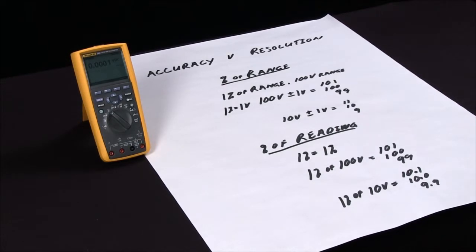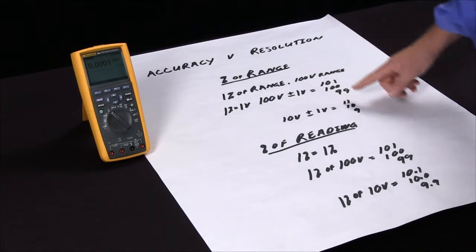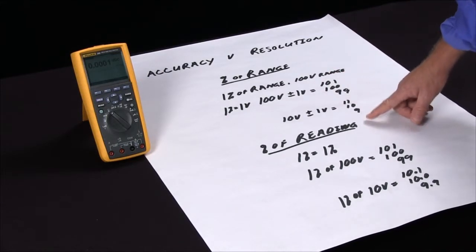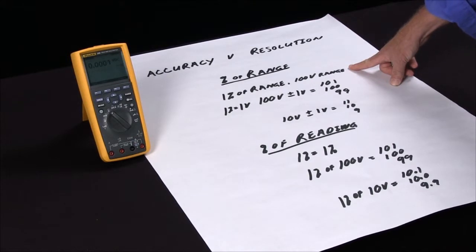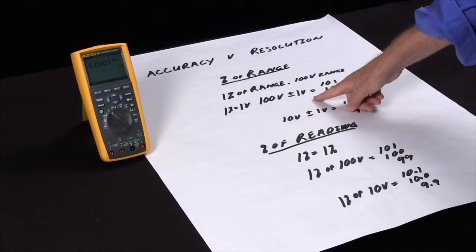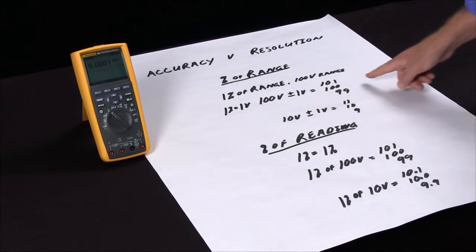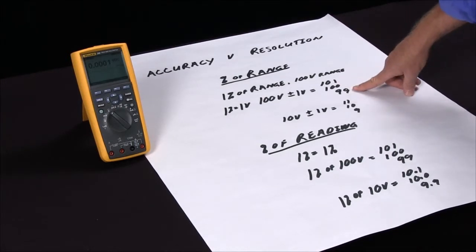So there's two ways we have accuracy specified. One is in percent of range and one is in percent of reading. For percent of range, if we have a one percent specification of range and we're on a hundred volt range, one percent of a hundred volts is one volt. So that means with a reading of a hundred volts that can be within specification at plus or minus one volt, so a reading between a hundred and one and ninety nine is actually a good reading on this meter.